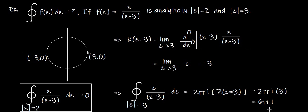For the integral of z/(z−3) dz around the closed curve |z|=3, the answer is 6πi. Remember: the pole must appear inside or on the closed curve to compute the residue; otherwise it is not considered.